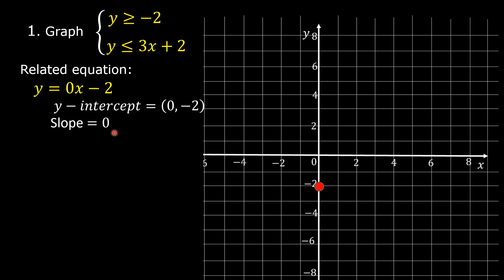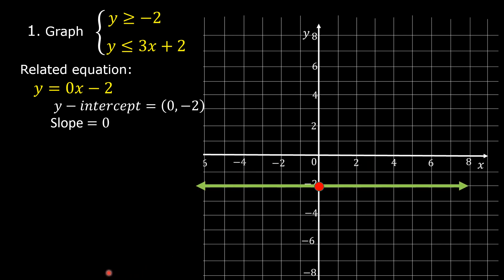If the slope is 0, then the graph of the line is parallel to the x-axis. Since the symbol of inequality in the first linear inequality is greater than or equal to, then we are going to draw a solid line passing through point (0, -2) parallel to the x-axis. This is the graph of y is equal to negative 2.